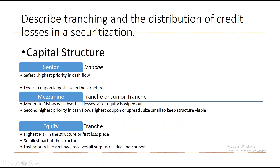The mezzanine tranche has moderate risk because it starts absorbing losses after the equity is wiped off. It gets the second highest priority in cash flow — after the senior tranche is paid. Because of this moderate risk, the coupon is high: highest coupon in fixed-rate, highest spread in floating-rate. The size of the mezzanine is kept intentionally small to keep the structure viable, because if it were larger the cost of expenses in the pool would be higher.